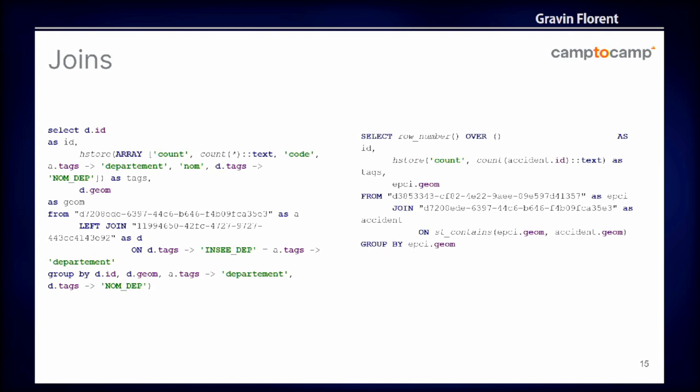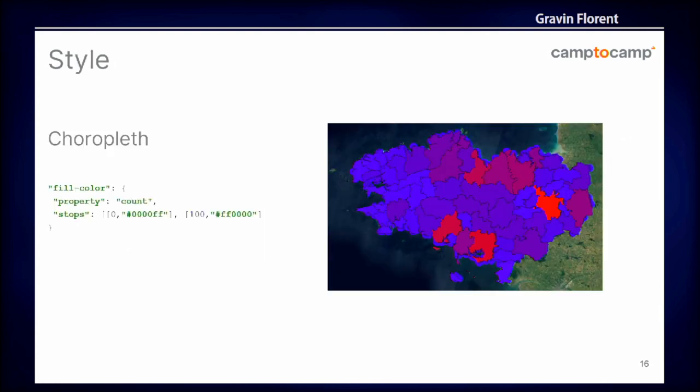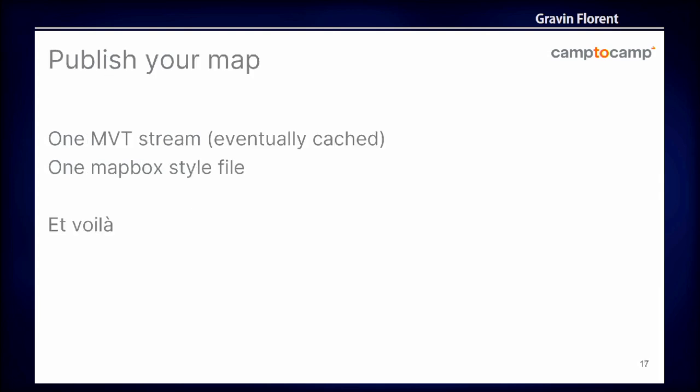This is an example of the automatic joins which are made when you push your tile set — both attribute and spatial joins. Using MapLibre style, it's very easy to do choropleth maps. In the end, it's just one stream of vector tiles that can contain points, aggregations, polygons, H3bin, whatever — and one MapLibre style — and you have your map published on the web.